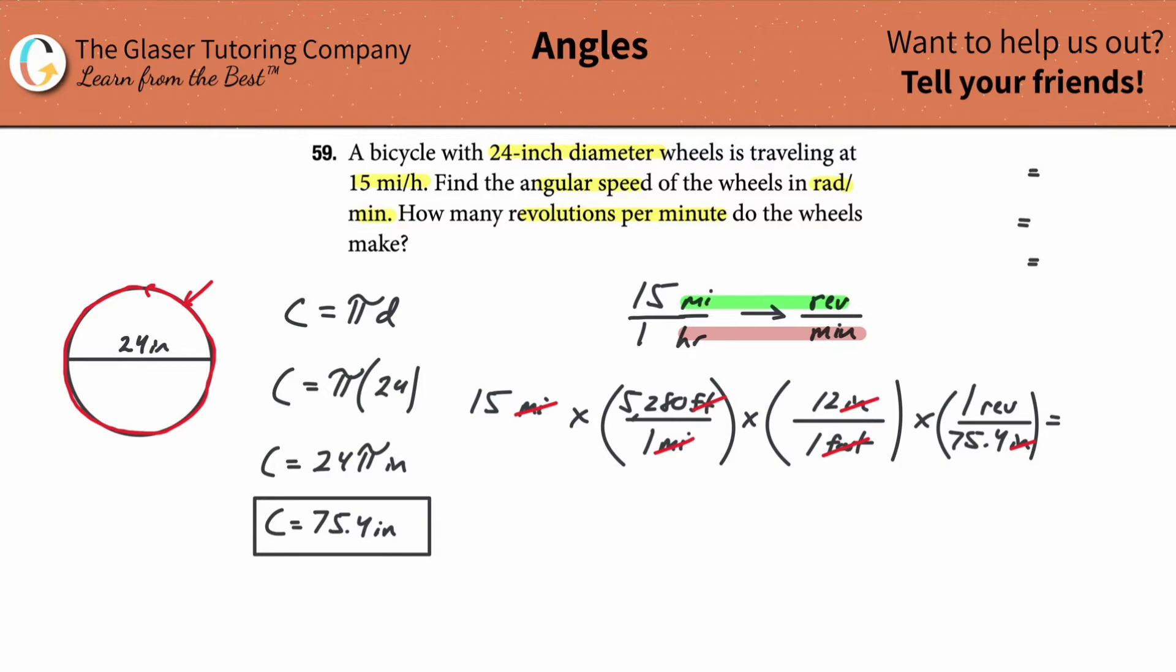So after you do all that, take a drink of water if you're talking it out loud because my mouth is extremely dry. But that might be too much information. Anyway, just plug it in. So 15 times 5,280 times 12, and then divide it by that exact value from bubble 4, 75.398, and this works out to be about 12,605 revolutions. So I did my top value. I got my revolutions.